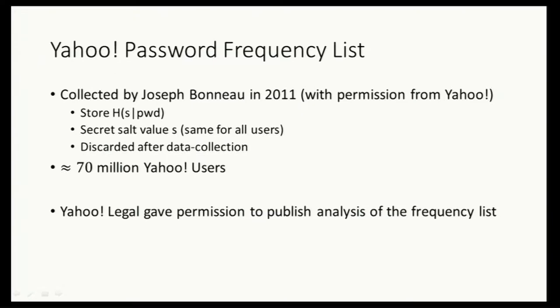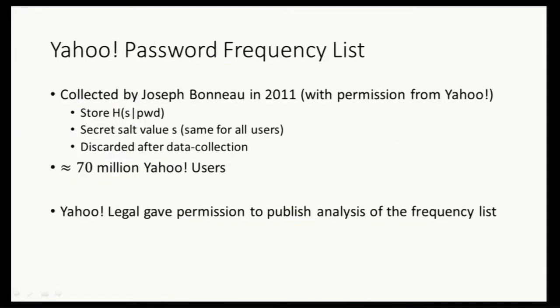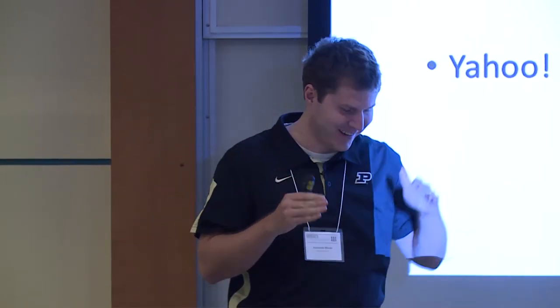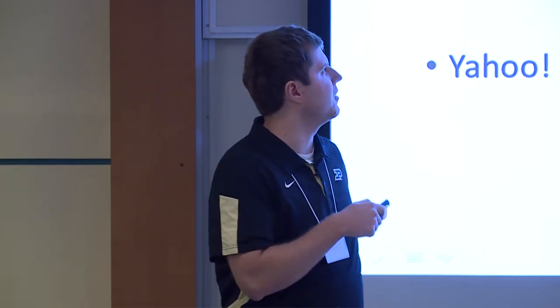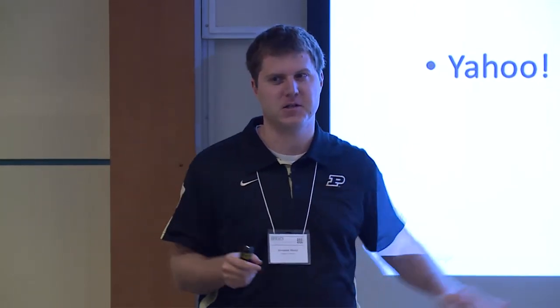To clarify what was stored: they stored the hash of the salt and password, along with some basic demographic information like age, language, and number of years with the Yahoo account — but no names. So potentially you could partition the list based on different subsets of these demographic features.